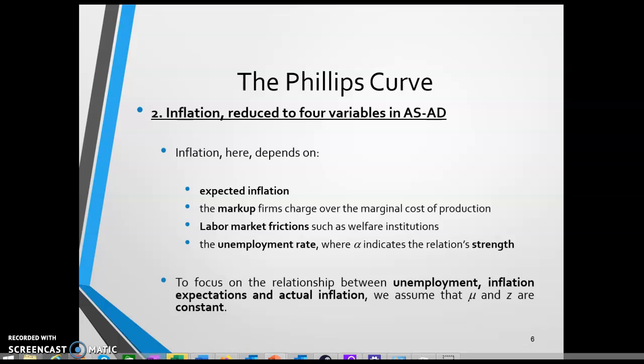In this simple specification, we condense a complicated subject like inflation into four simple things: expected inflation, markup indicating market competitiveness, labor market frictions captured by variable z, and the unemployment rate. Inflation increases one-for-one when expected inflation increases — this should be intuitive. For instance, if you think the inflation rate next year is going to be 2%, you should ask for a 2% higher nominal wage, which drives up firm production costs by 2% and therefore causes 2% inflation.